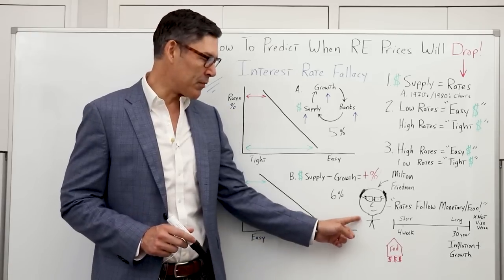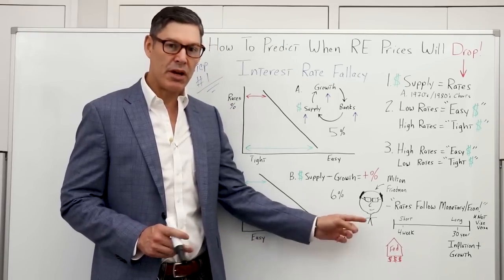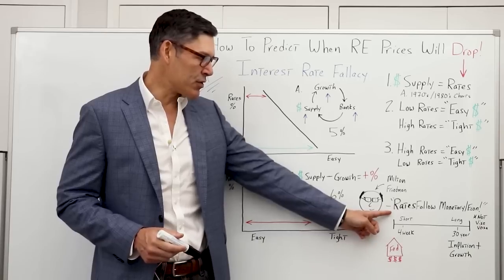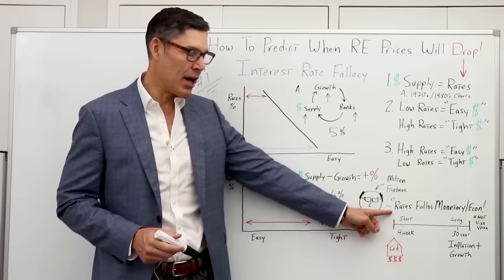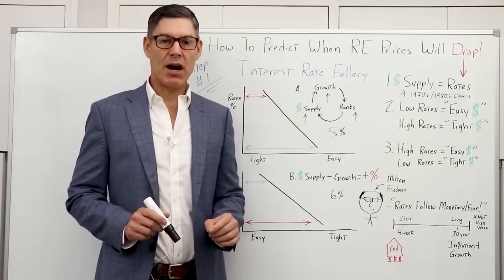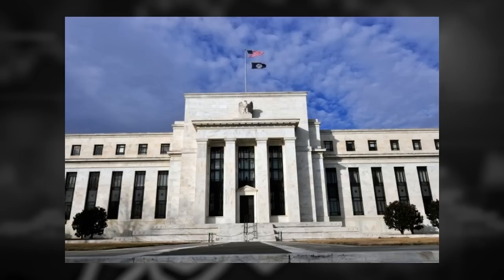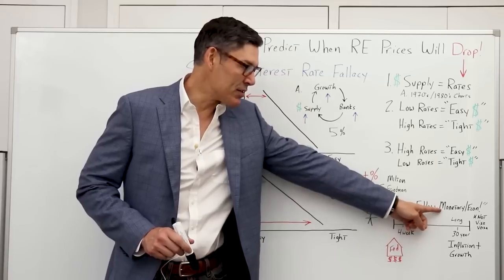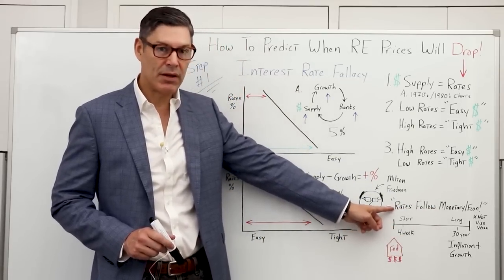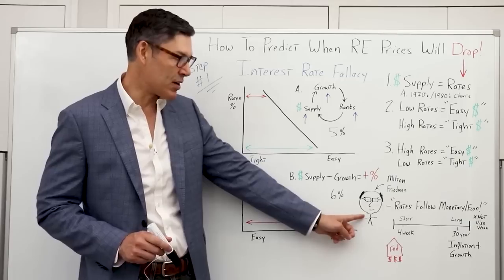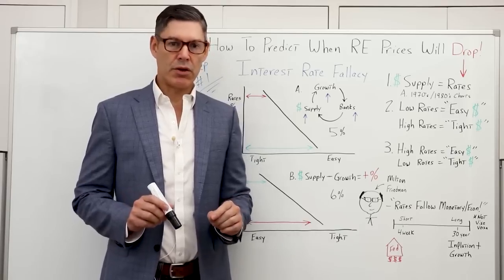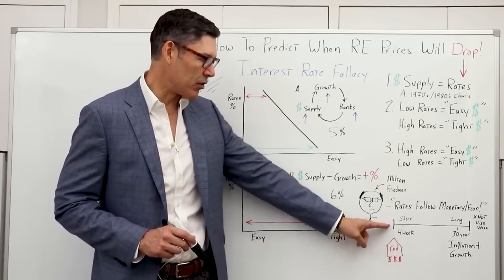Another key point from Milton Friedman is that interest rates follow monetary and economic conditions. Most mainstream economists — especially the Fed — want you to believe that monetary conditions and economic growth follow interest rates. Friedman teaches us it is the exact opposite. Now let's get into a little more nuance and talk about the yield curve.